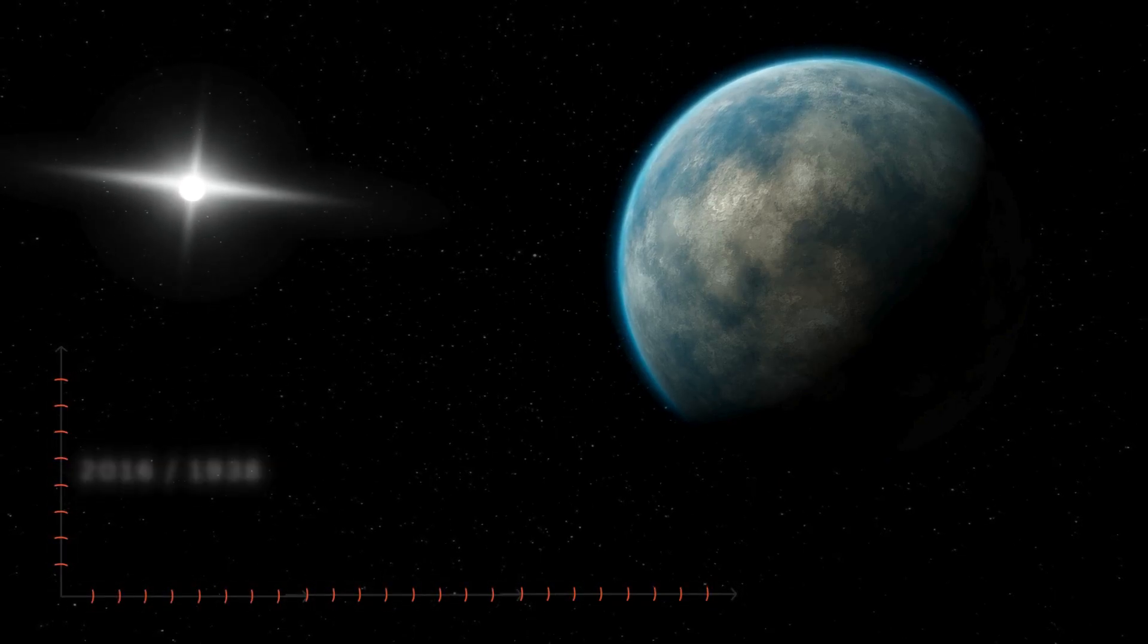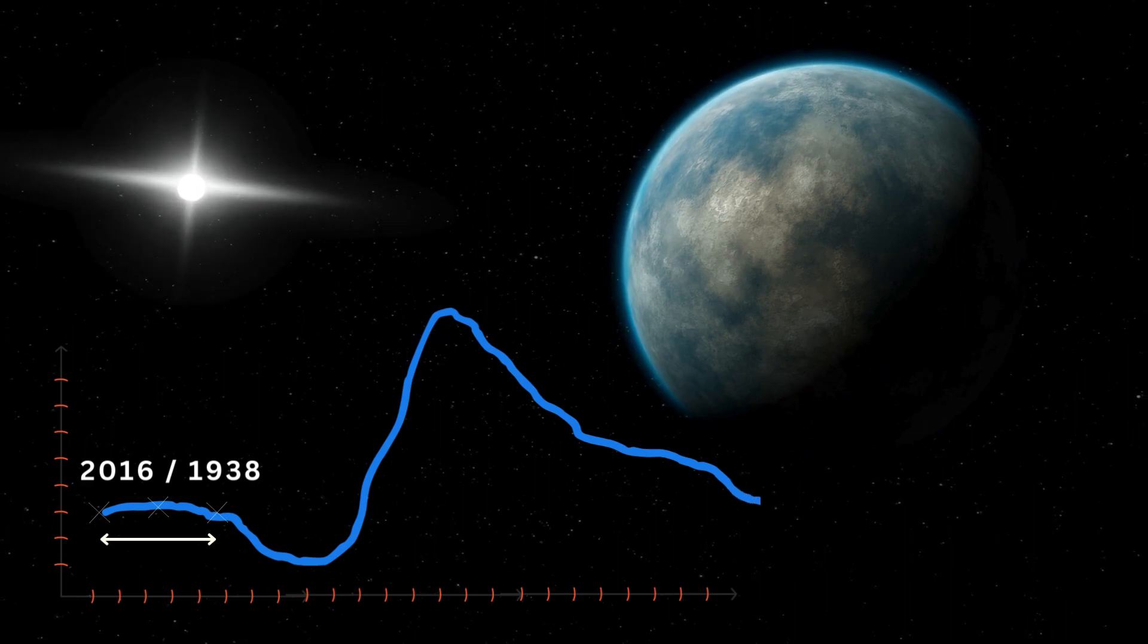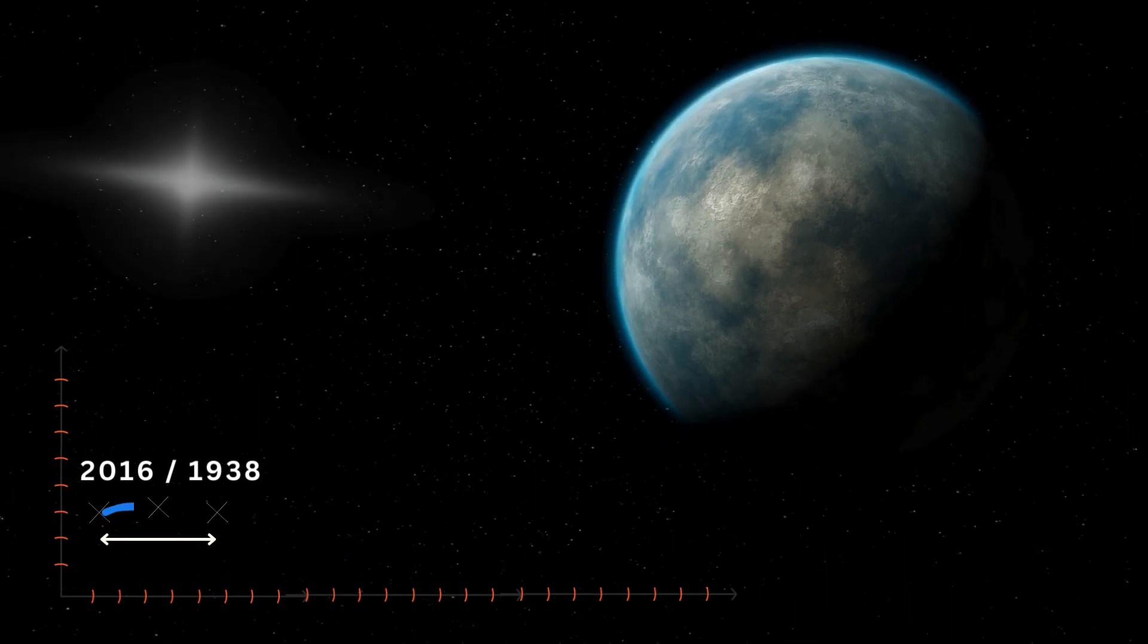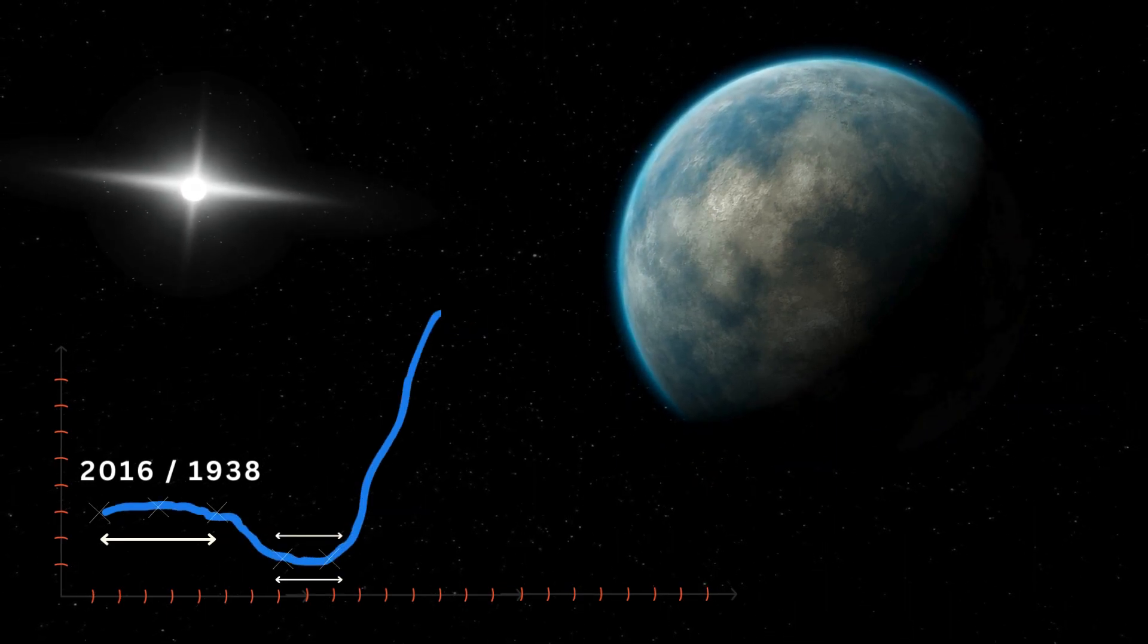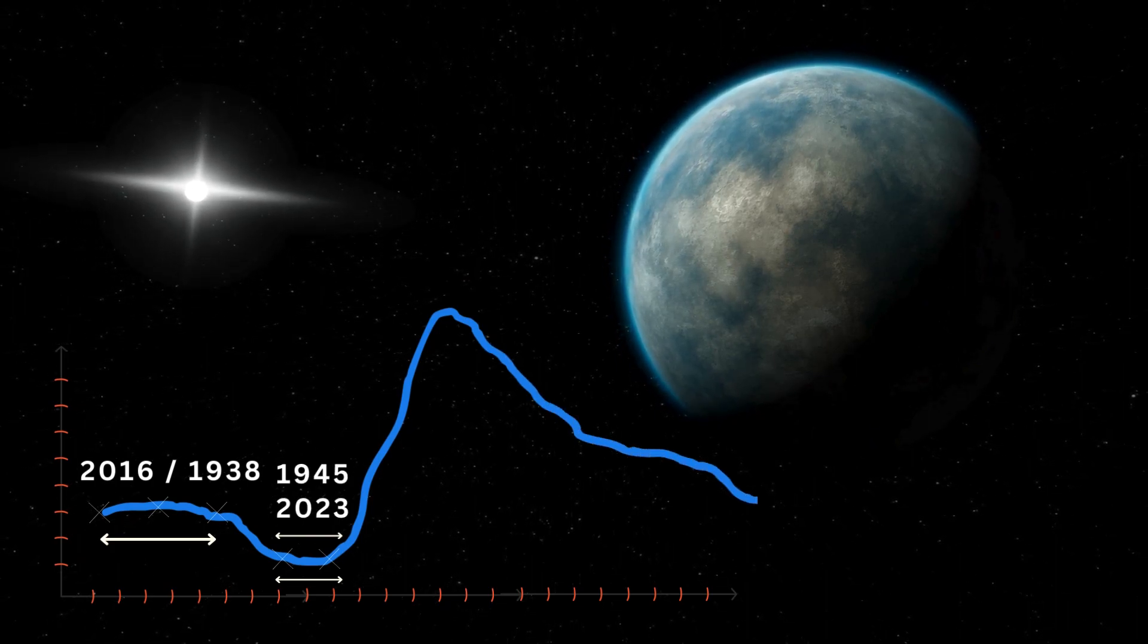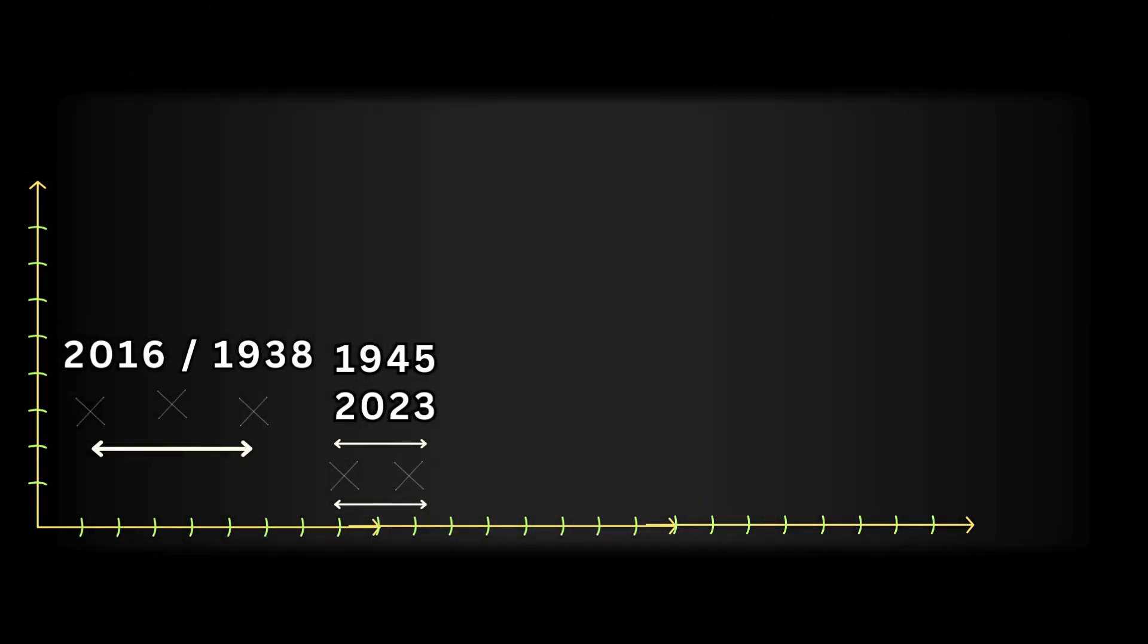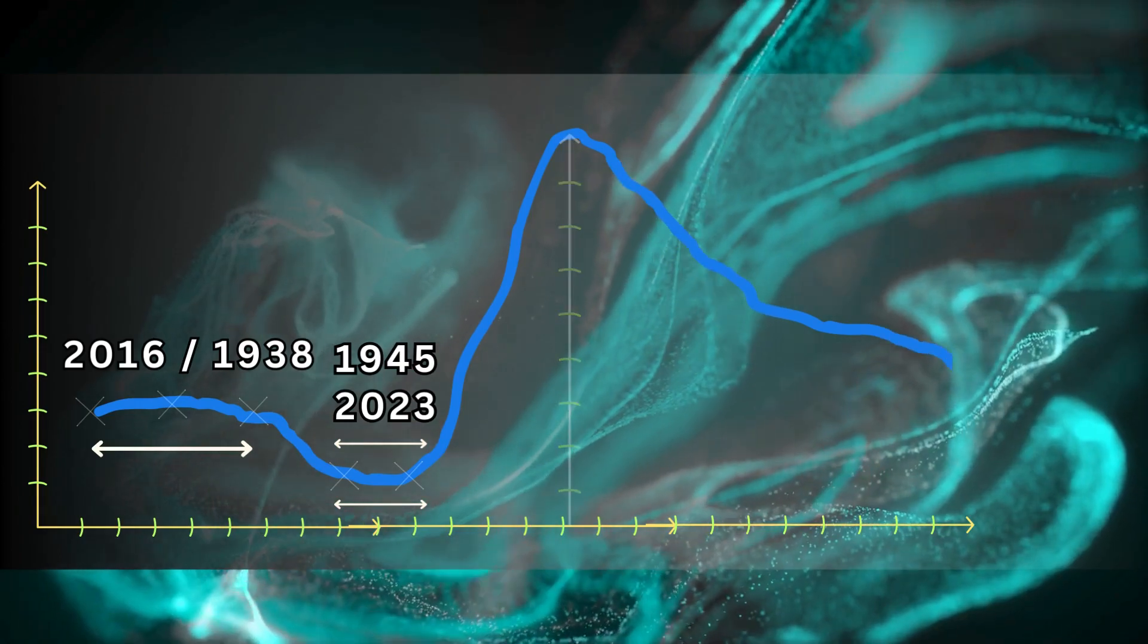NASA's latest data suggests the next explosion could happen anytime between now and September this year. In April 2016, T CrB showed a steady brightening pattern, similar to what was observed in 1938. Also, the recent dimming and brightness occurred in April 2023 was significant enough, which was the same case, right before 1946. Altogether, these similar events further support this prediction in 2024.